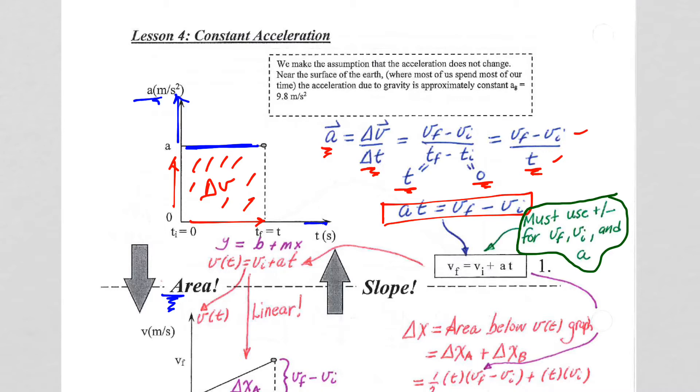V final equals V initial plus acceleration times time. You must, and must means must, must use positive or negative for both the Vs and the A. V final, V initial, and A. Of course, time is always positive.